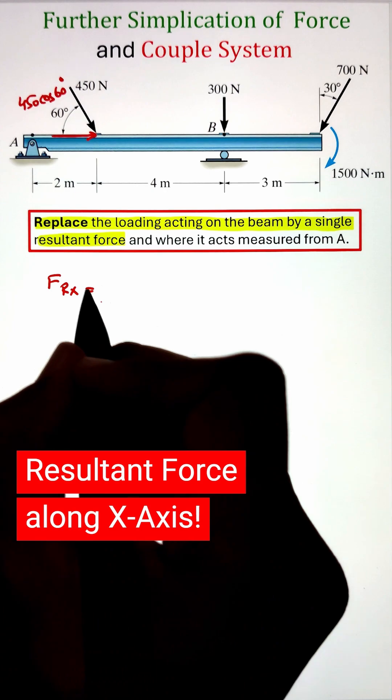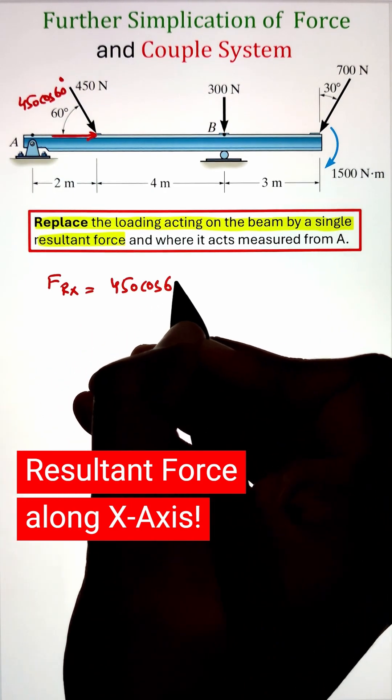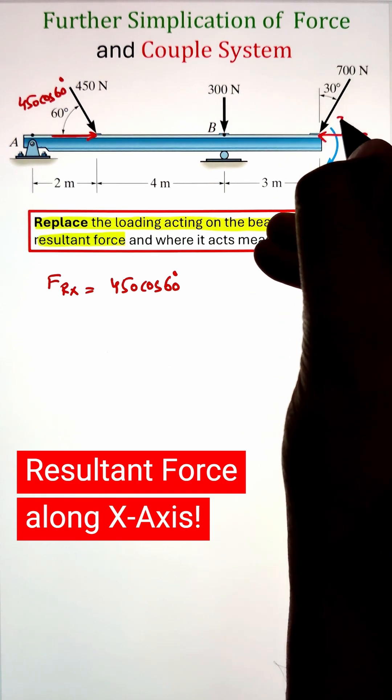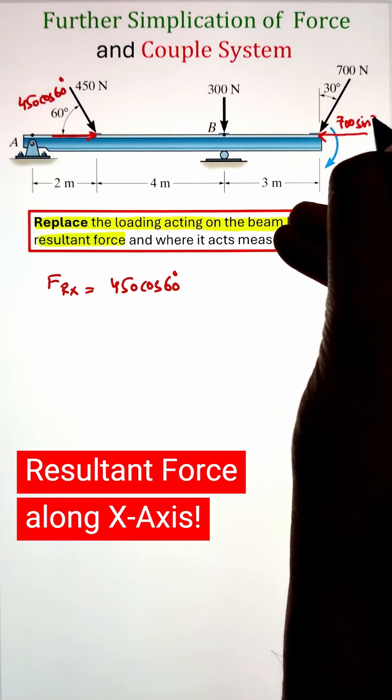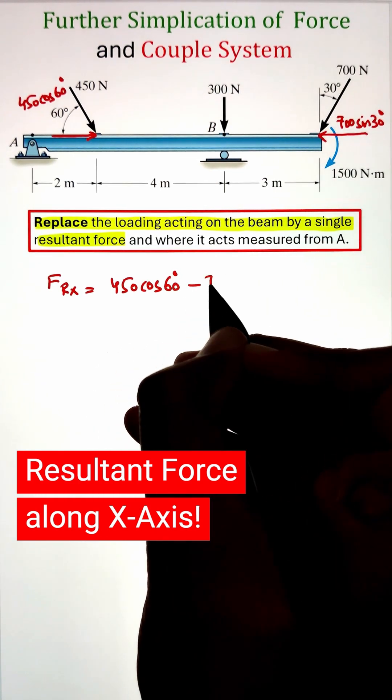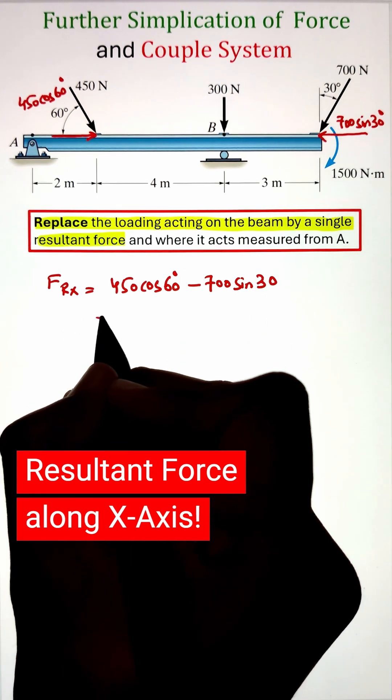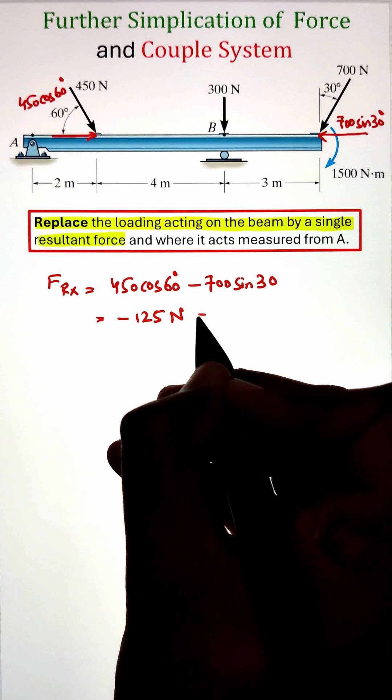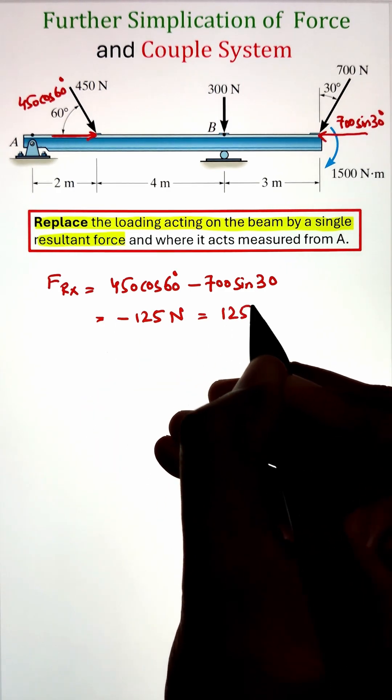So to start, our 450 newton is making an angle of 60 degrees with respect to the x axis, so the cos function will project it along the x direction, whereas our 700 newton is making a 30 degree angle with respect to the vertical y axis, so we have to take the sine 30 function in order to project it along the horizontal x axis. Adding them together gives us our final component as 125 newton that is directed towards the right.